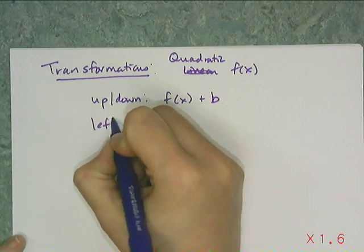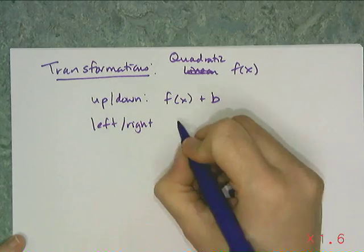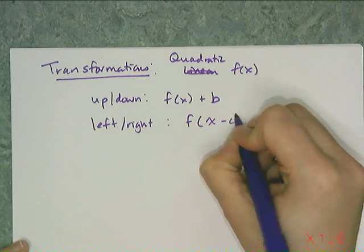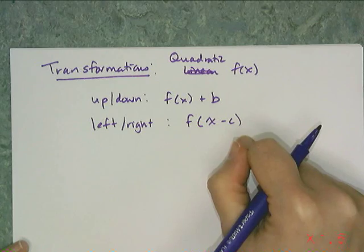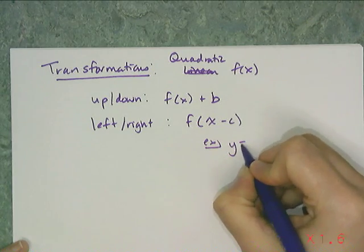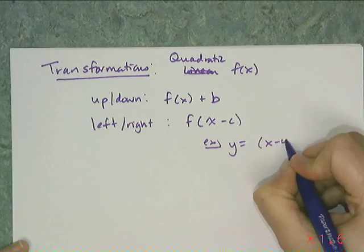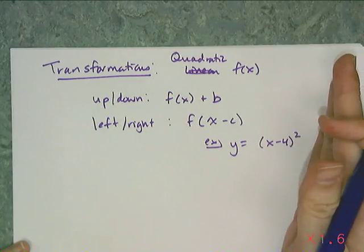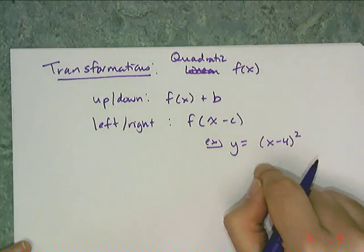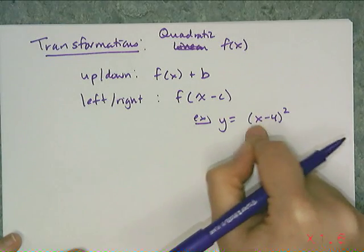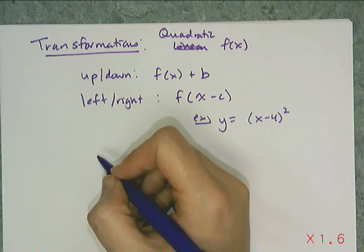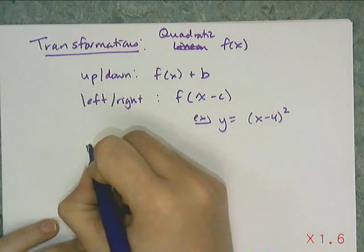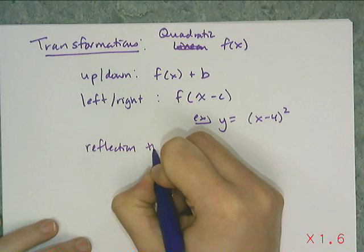And then if I wanted to do a left or right shift, I did the exact same thing I did with all the other functions and replace x with x minus some number. So for example, if I said y equals (x - 4)², that's going to shift it to the right 4 units because I subtracted off 4, which moved the 0 to the 4. So remember that has to be inside the parentheses and squared in order to do that left right shift.